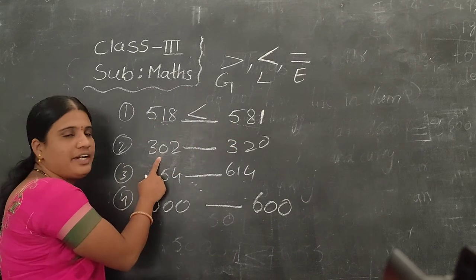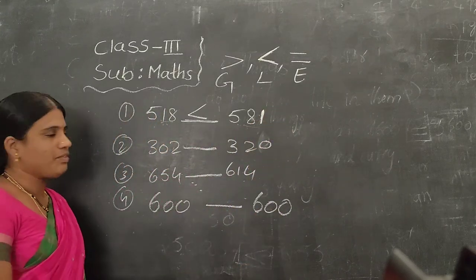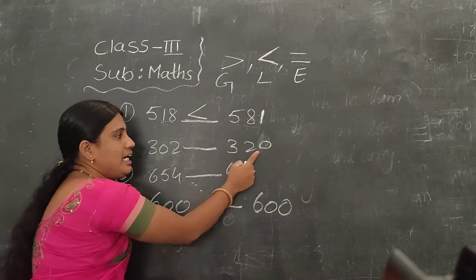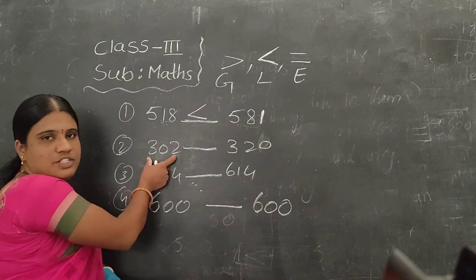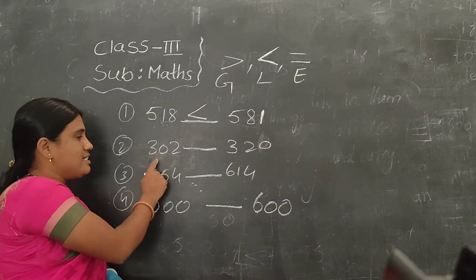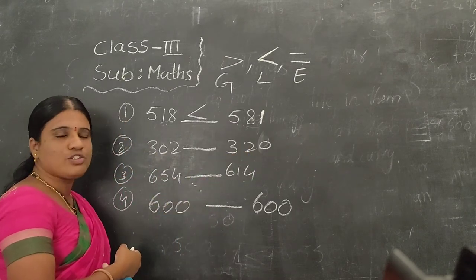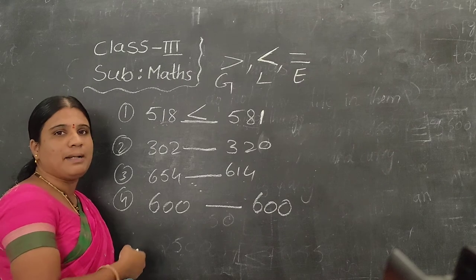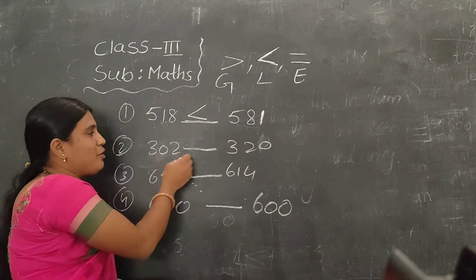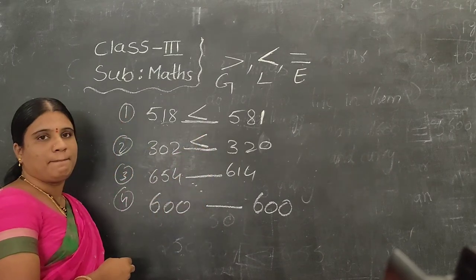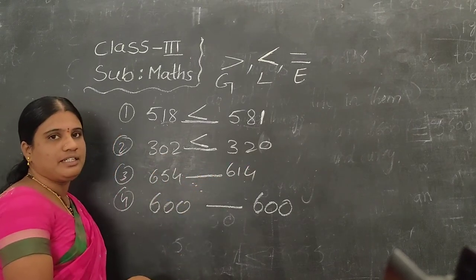In the second example, we have 302 and 320. Can you see which is the smallest number? 302 is smaller than 320. So here also we have to use the less than symbol, because the first number is smaller than the second number. 302 is smaller than 320.